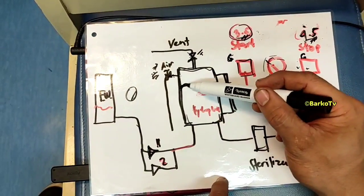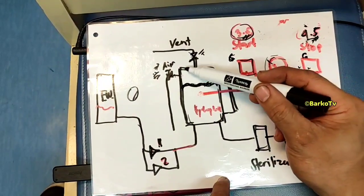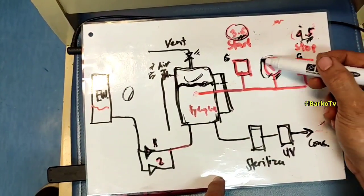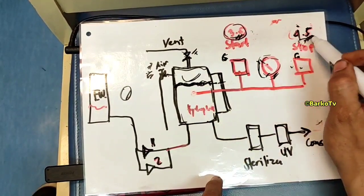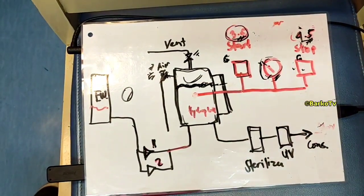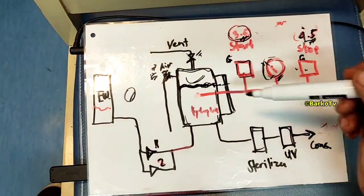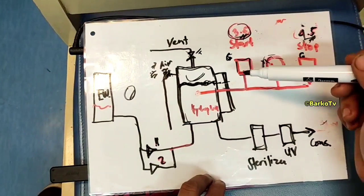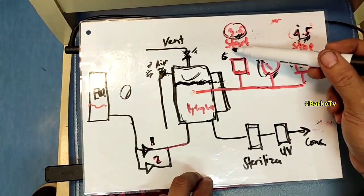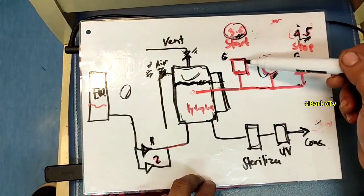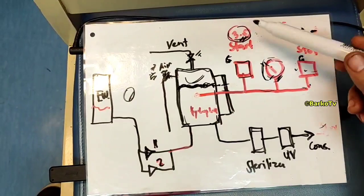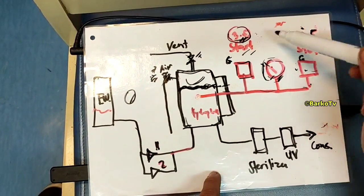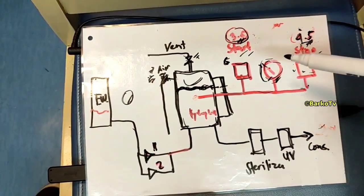Stop is set at 4.5 bar — three-quarters of water, then the rest is air. Build up pressure from zero to 4.5, stop, and then close the air valve. This red line indicates the pipe for the pressure switch. We have two pressure switches: start at 3.5 bar and stop at 4.5 bar.